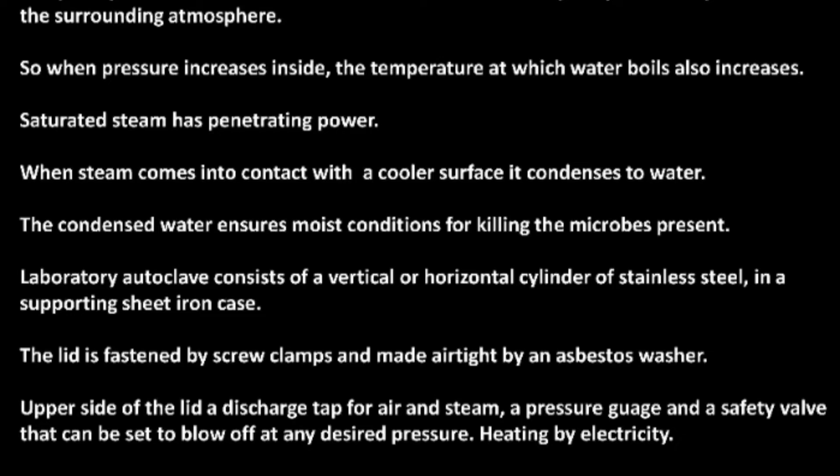A laboratory autoclave consists of a vertical or horizontal cylinder of stainless steel in a supporting sheet iron case. The lid is fastened by screw clamps and made airtight by an asbestos washer. On the upper side of the lid there is a discharge tap for air and steam, a pressure gauge, and a safety valve that can be set to blow off at any desired pressure. Heating is by electricity.